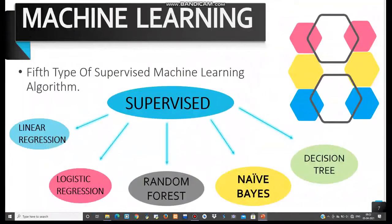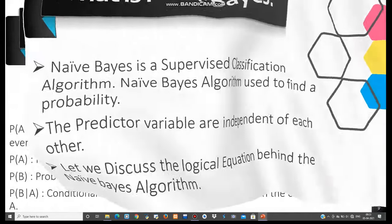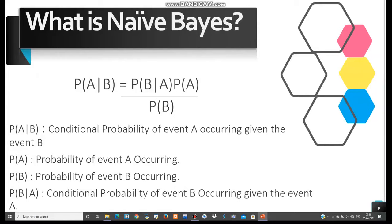Our fifth type of supervised learning algorithm is the Naive Bayes algorithm. Naive Bayes is a supervised classification algorithm used to find a probability. The main concept of Naive Bayes is that the predictor variables are independent of each other, meaning the output depends on independent variables that have nothing to do with each other. The principle behind Naive Bayes is the Bayes theorem, also known as Bayes rule, which is used to calculate conditional probability.